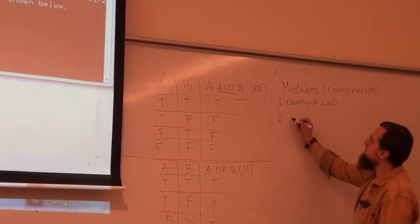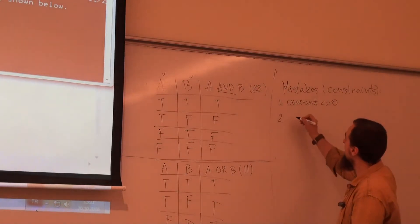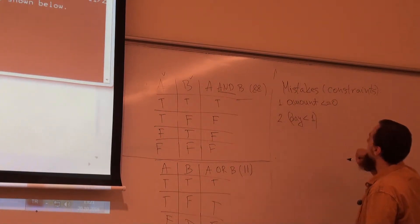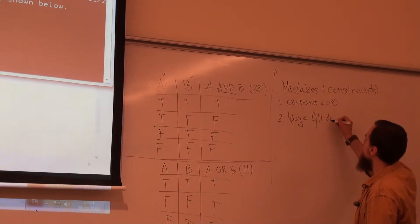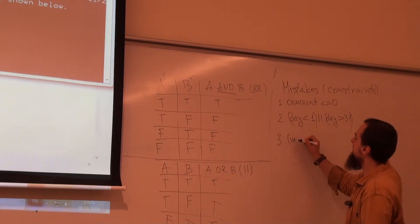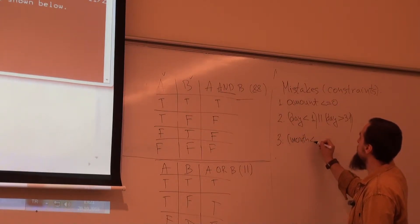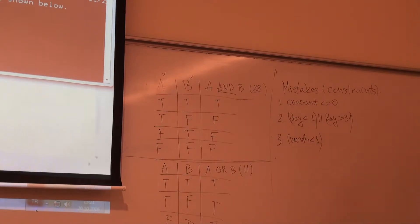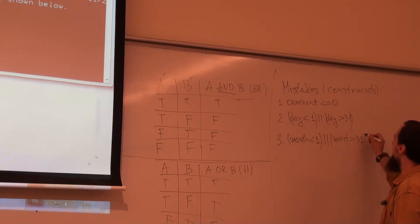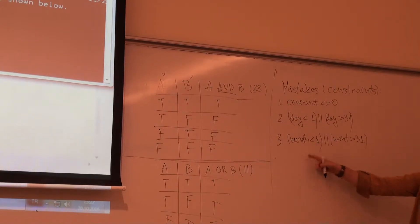The second constraint: it doesn't make sense for the day to be smaller than 1, so we have day smaller than 1, or the day to be greater than 31. Also, something similar applies for the months. The month shouldn't be smaller than 1, or the month shouldn't be greater than 12.